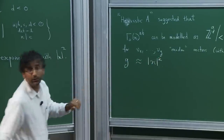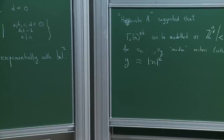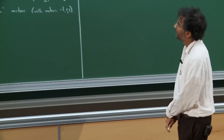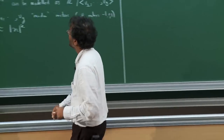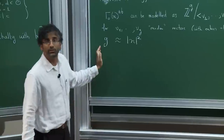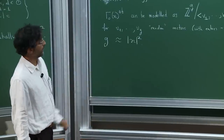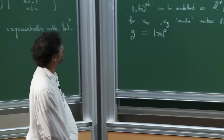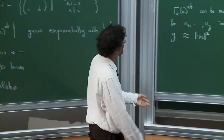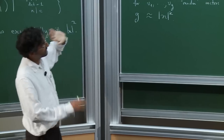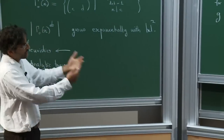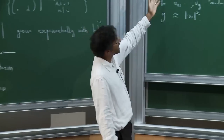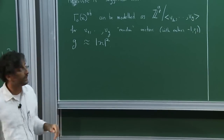That's what we discussed yesterday. Now I want to explain one way in which this heuristic is definitely inadequate. It's a crude heuristic — it very roughly correctly predicts the size, but if you ask about anything finer, it's really wrong.